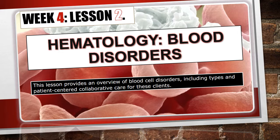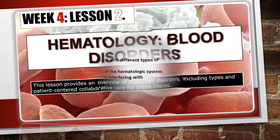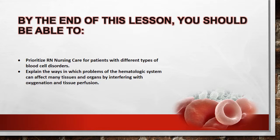Remember that hematological problems result from impaired production, impaired function, and abnormal destruction of any type of blood cell. By the end of this lesson, you will be able to prioritize RN nursing care for patients with different types of blood cell disorders, and explain the ways in which problems of the hematologic system can affect many tissues and organs by interfering with oxygenation and tissue perfusion.